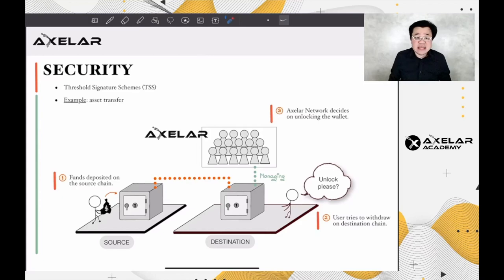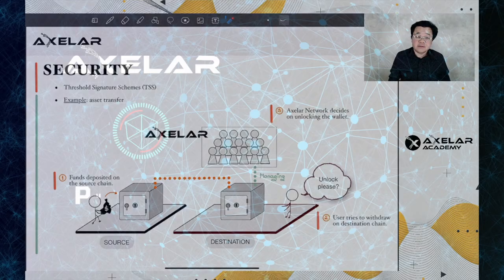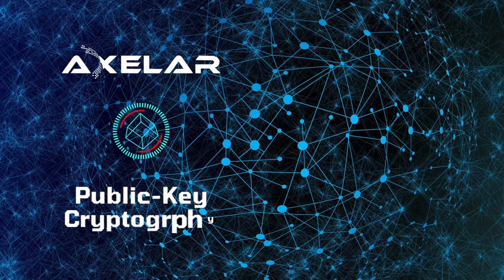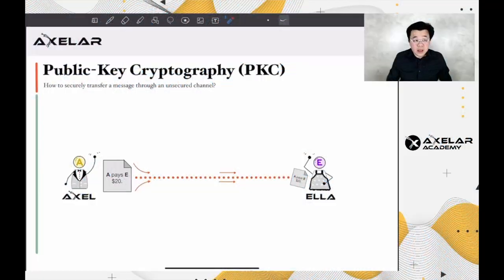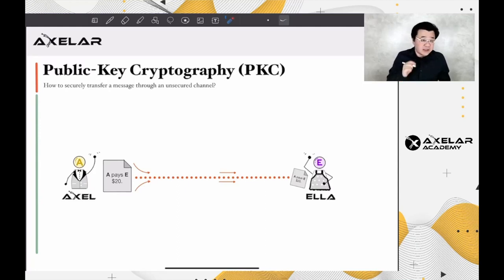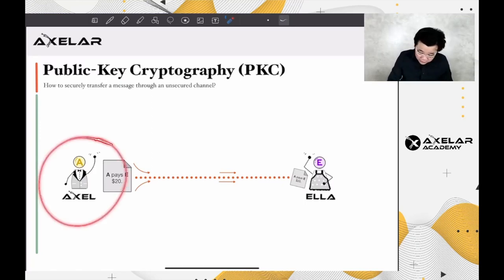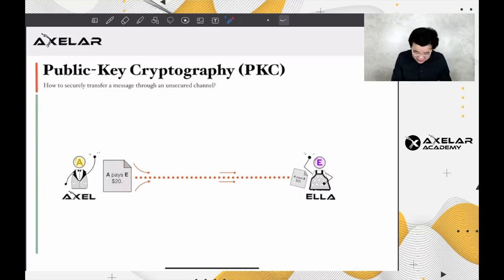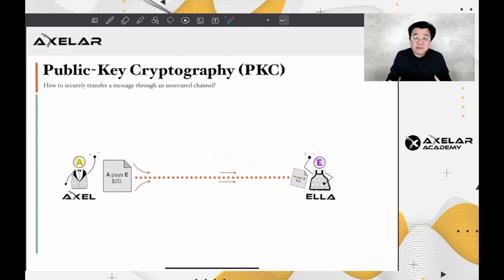To understand how the schemes work, we must first review some fundamental cryptographic concepts. To fully grasp the Threshold Signature Schemes, let me refresh your memory on public key cryptography. It is intended to address the following issue. Assume there are two people, Axel and Ehler. Axel wishes to convey a message to Ehler via an unsecure channel where anyone can listen in on all messages broadcasted.